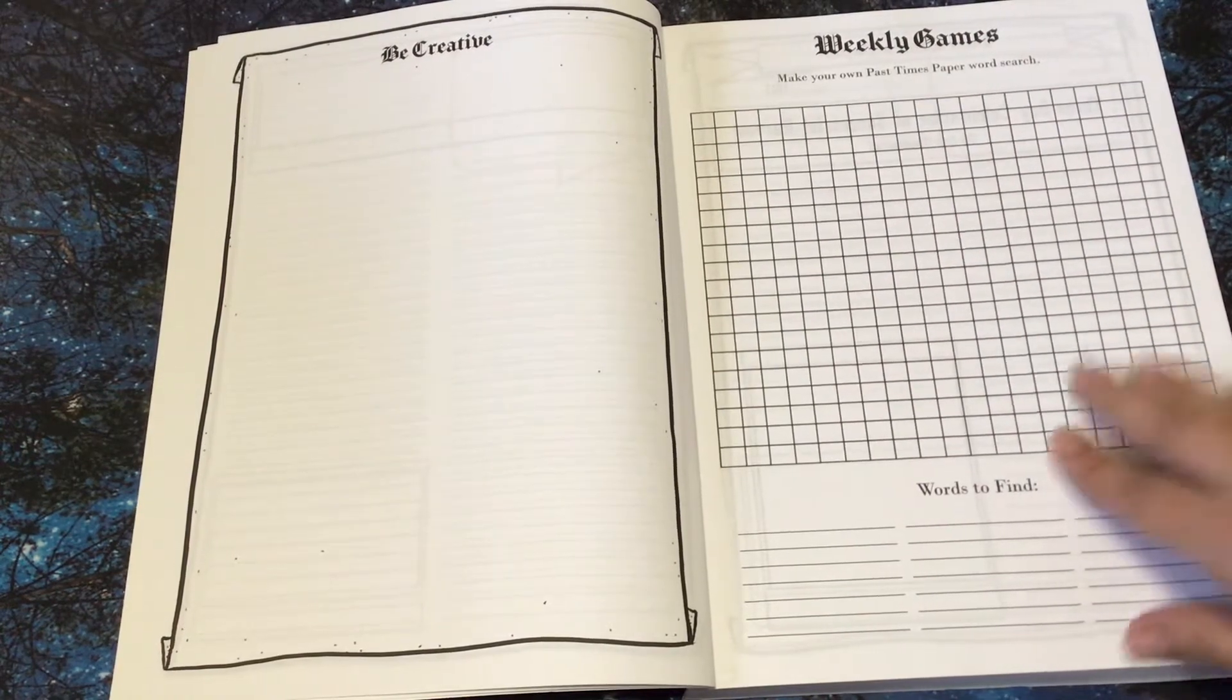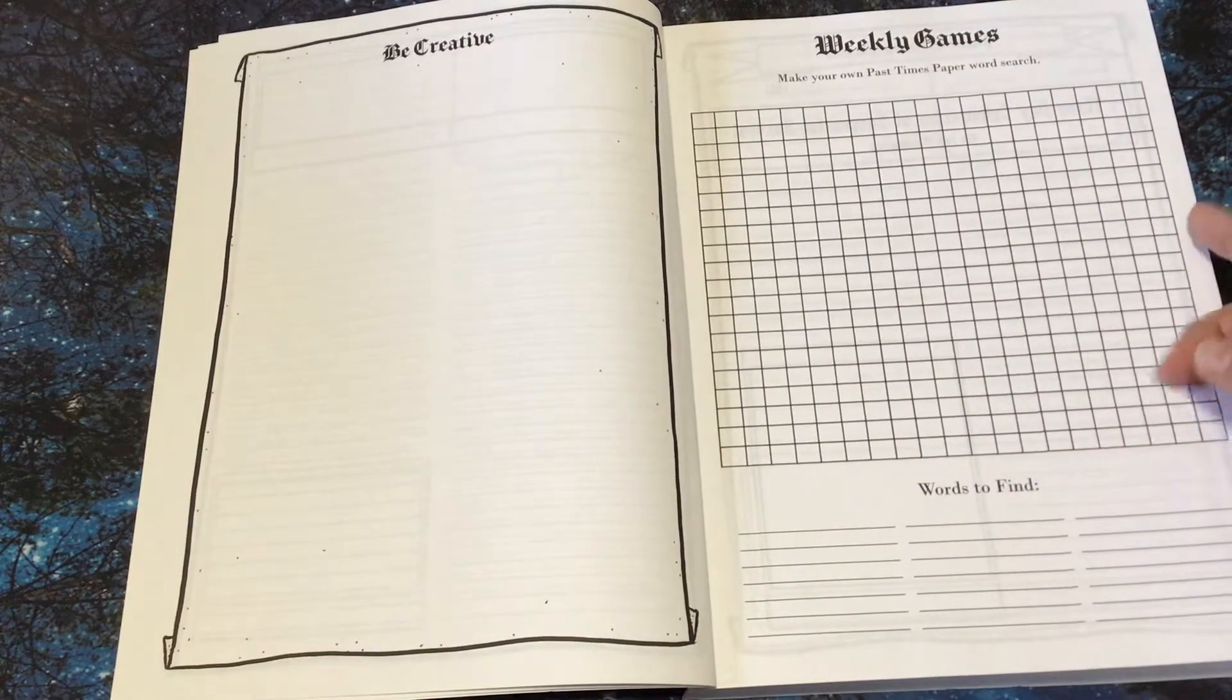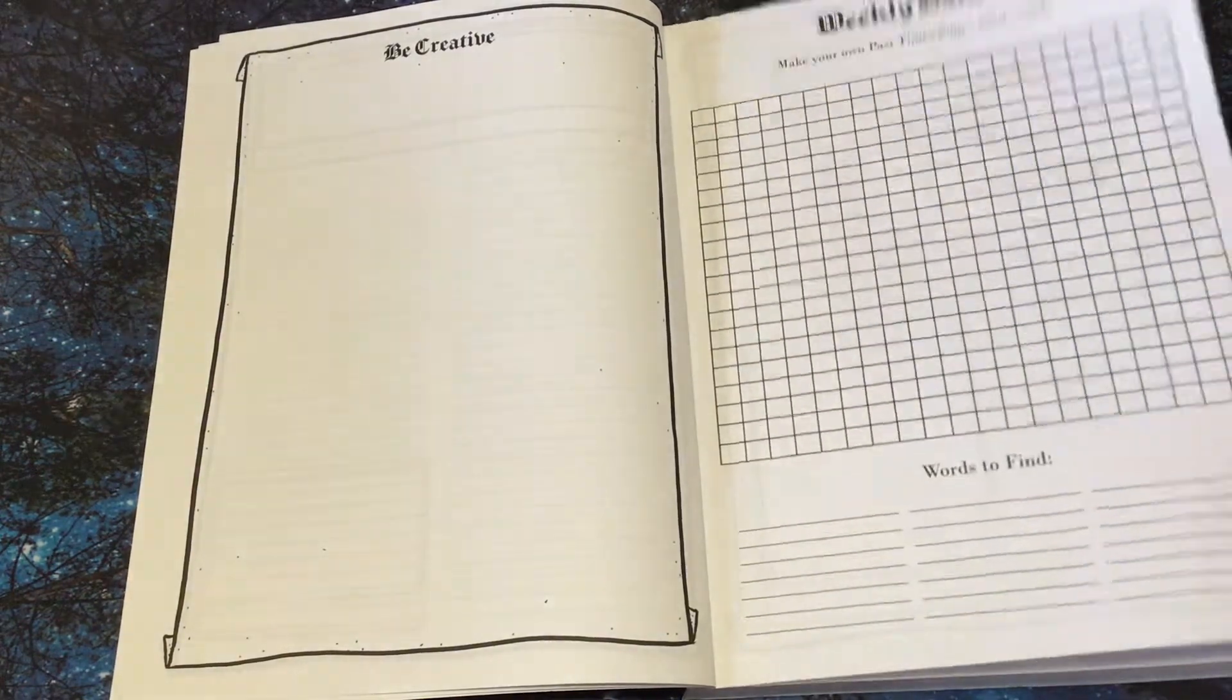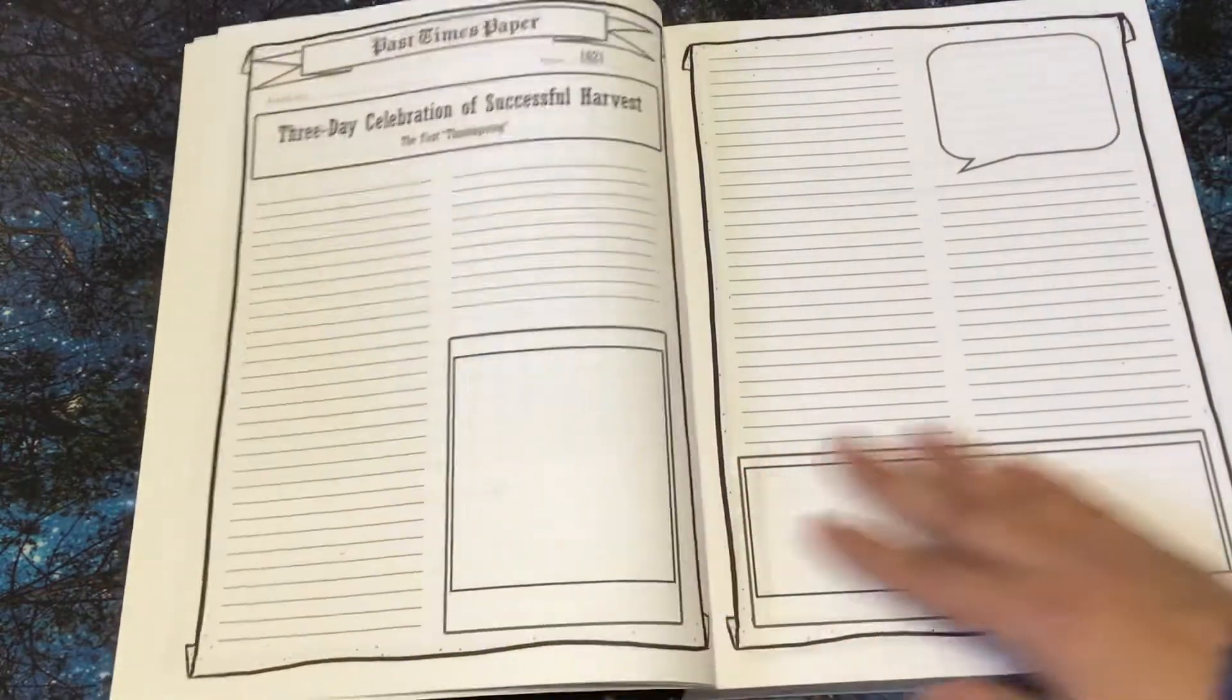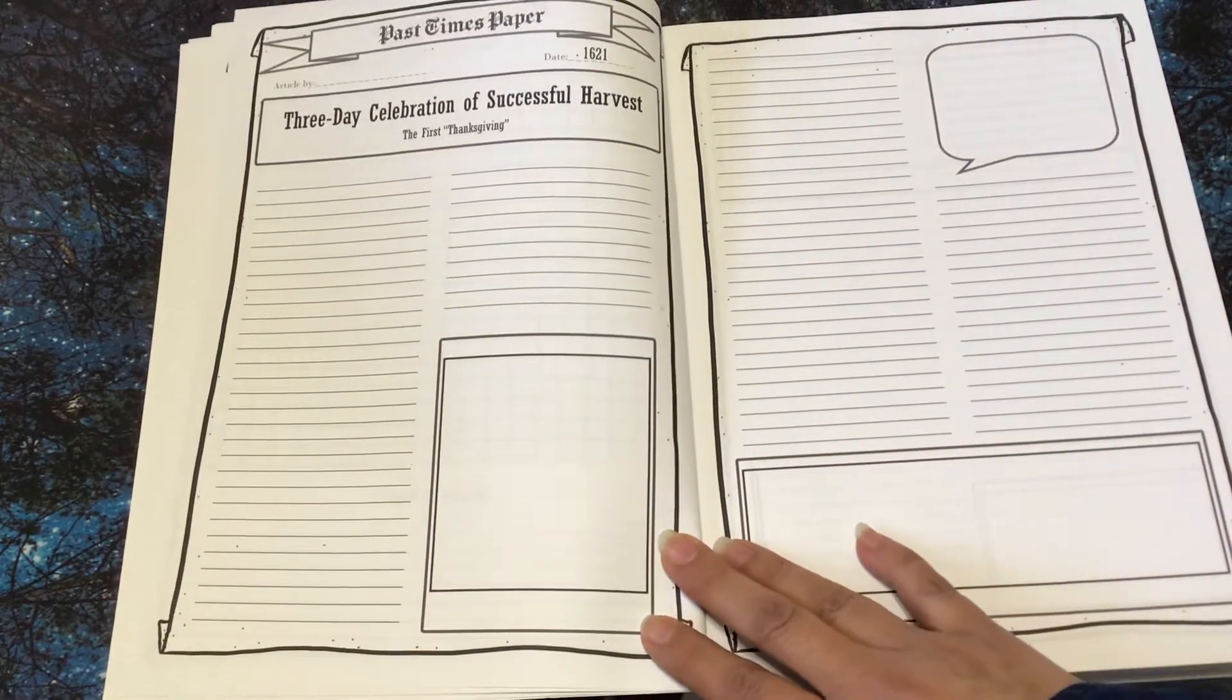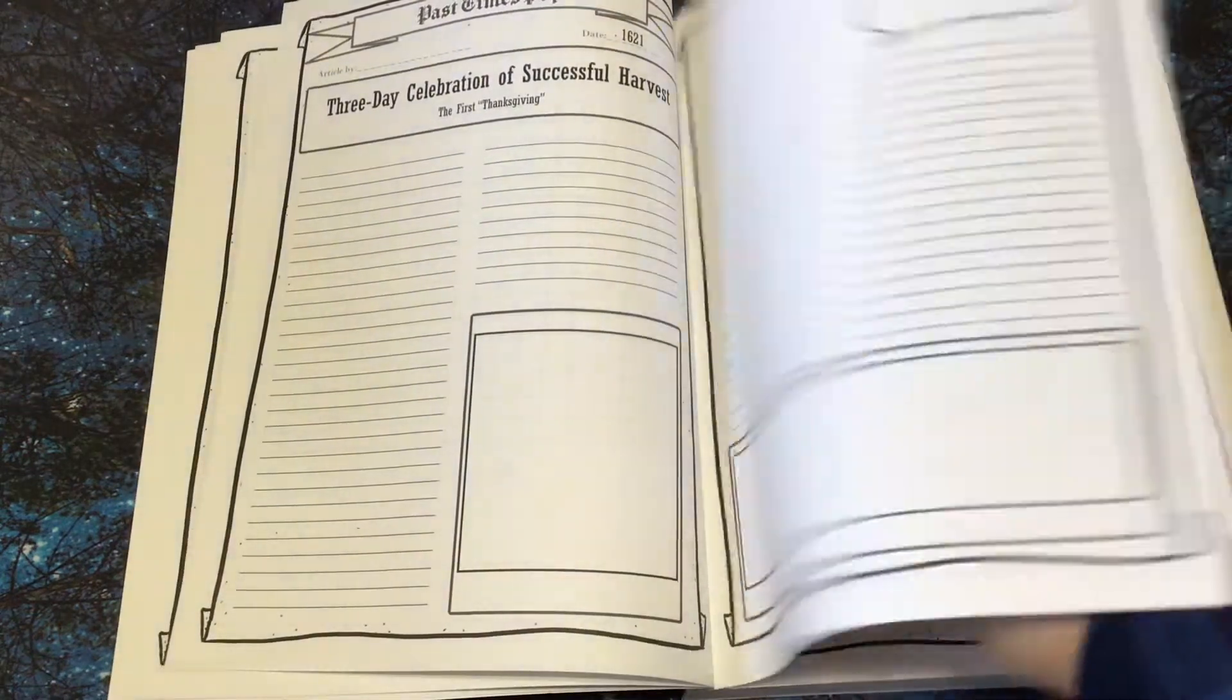Weekly games. Make your own pastime paper word search. So they would put the words here and then you could have someone find the words. That would be fun. Three day celebration of successful harvest. The first Thanksgiving. You're going to write about that.